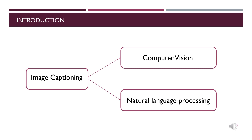Before starting, we have to define image captioning. So what is image captioning? It is the task of describing the contents of an image in words. It integrates both computer vision and natural language processing. Computer vision is a field of artificial intelligence that allows computers and systems to derive meaningful information from digital images, videos, and other visual inputs, and to take action or make recommendations based on this information. On the other side, we have natural language processing, which is a branch of artificial intelligence that focuses on giving machines the ability to understand, generate, or translate human language as it is written or spoken.